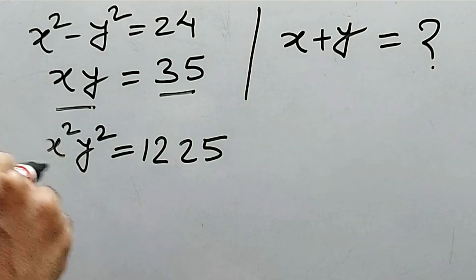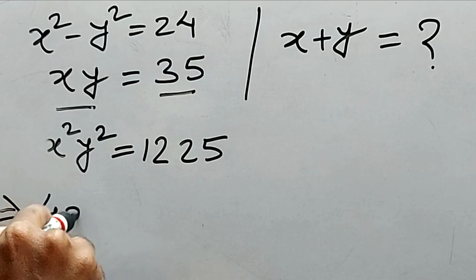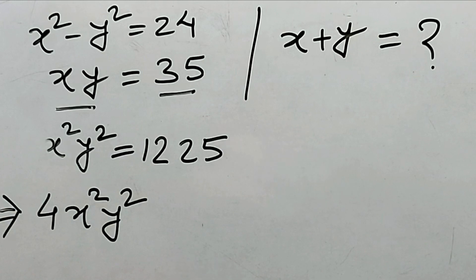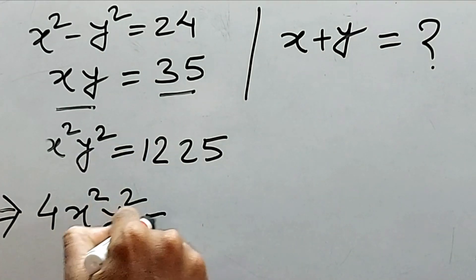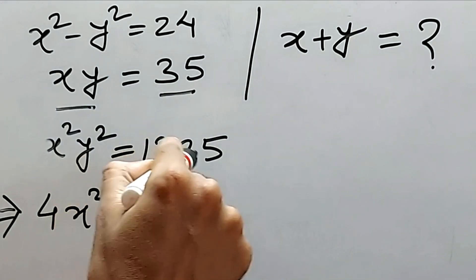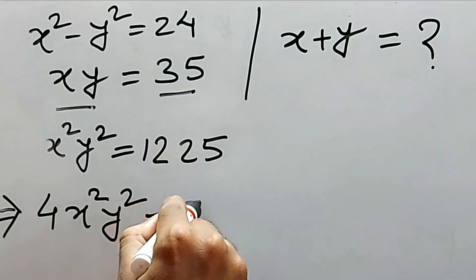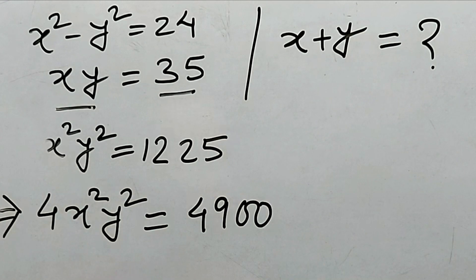Okay. Now this is not 4ab, this is ab. So let's just make it 4ab. That is 4 into x squared, y squared. And multiplying with 4 means 4 into 12 is 48, 4 into 25 is 100. So 4, 9, double zero. Always try to do this type of calculations in your mind.